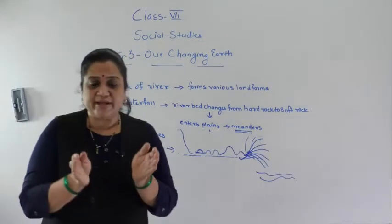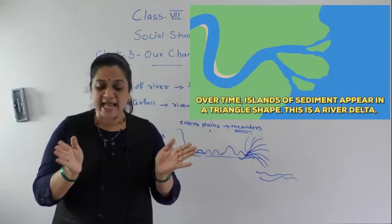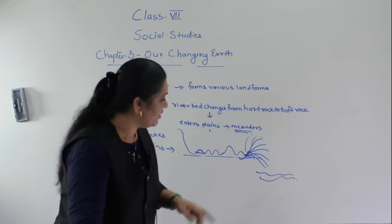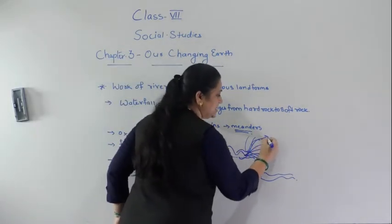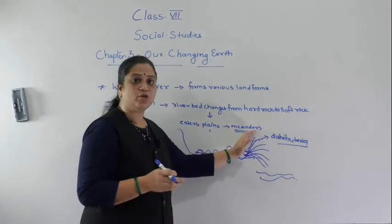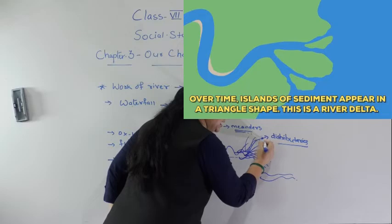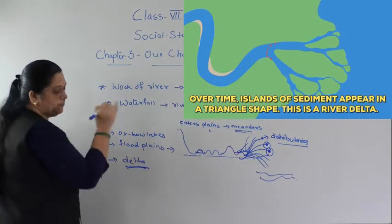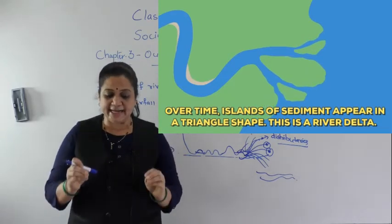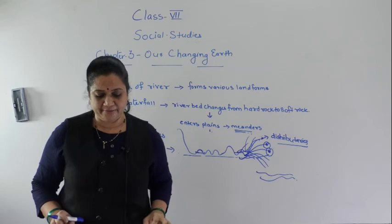Now let us see the last one — the delta. When the river approaches the sea, the speed of the river decreases and the river begins to break up into a number of streams called distributaries. These distributaries carry sediment and deposit it at the mouth of the sea, thus forming the delta. Delta is a landform at the mouth of the river formed by the deposition of sediments carried by the distributaries.